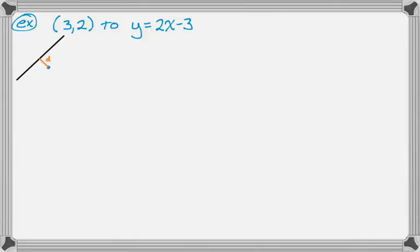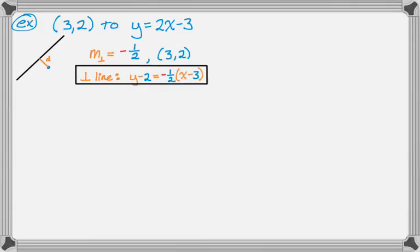The first thing that I need is the equation of the line perpendicular to the given line. The slope of that is going to be the opposite reciprocal of the slope of the given line, so negative 1 over 2. The given point was (3, 2), so that's the point that we use. Using point-slope form, the perpendicular line is y minus 2 equals negative 1 over 2 times the quantity x minus 3.